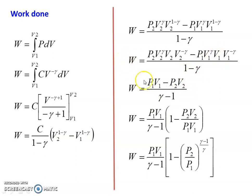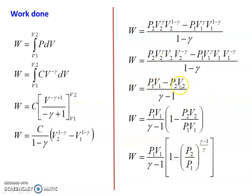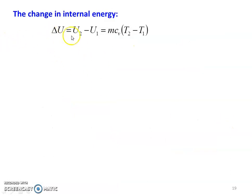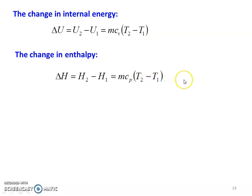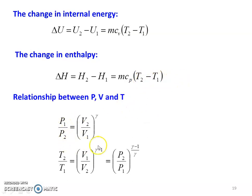The work done is also equal to P1·V1 divided by (gamma minus 1) into [1 minus (P2/P1) to the power (gamma minus 1)/gamma]. The change in internal energy is delta U equals U2 minus U1 equals m·Cv·(T2 minus T1). The change in enthalpy is delta H equals H2 minus H1 equals m·Cp·(T2 minus T1). The relation between pressure, volume, and temperature: P1/P2 equals (V2/V1)^gamma, and T2/T1 equals (V1/V2)^(gamma minus 1) equals (P2/P1)^((gamma minus 1)/gamma).